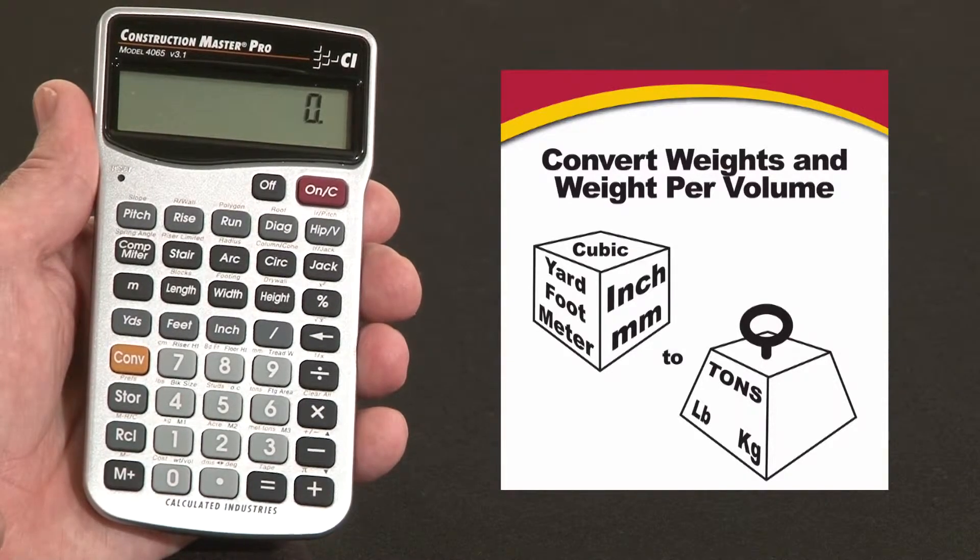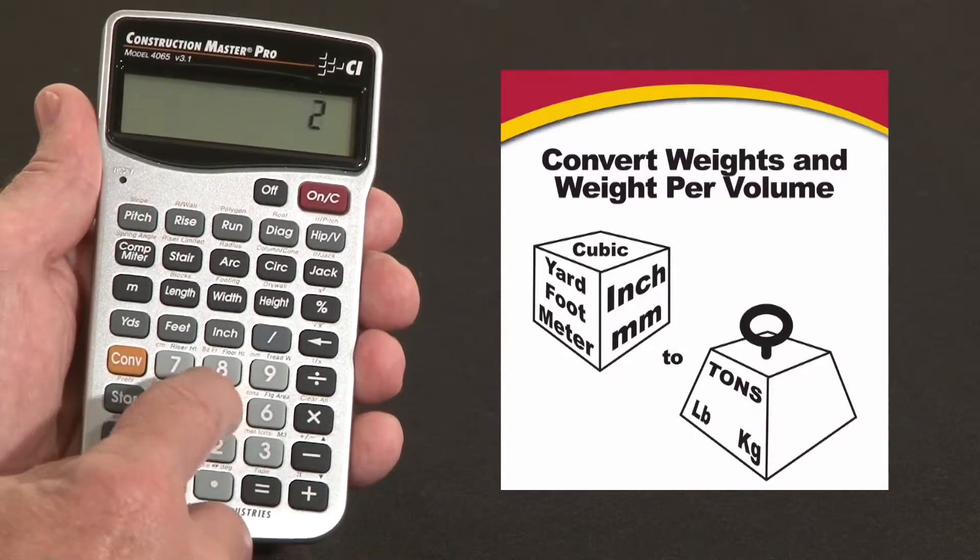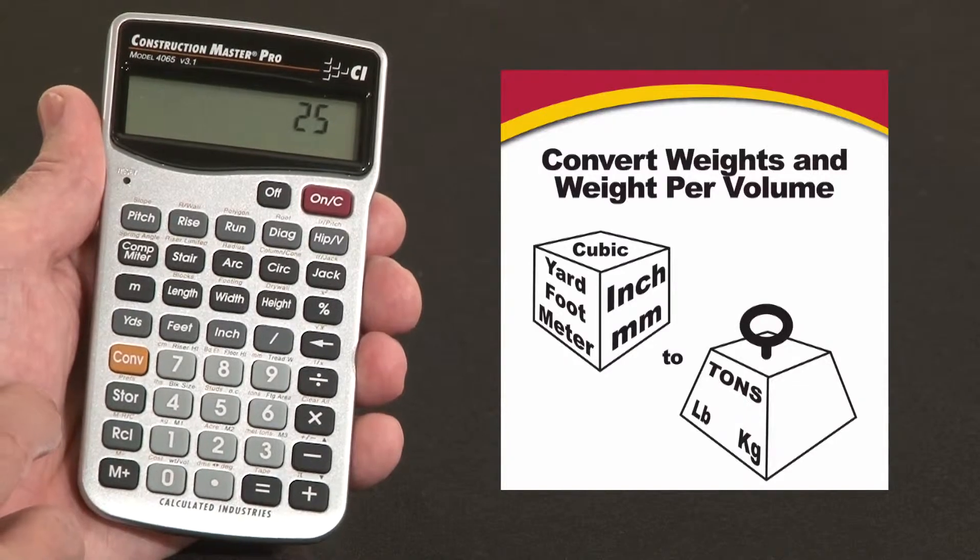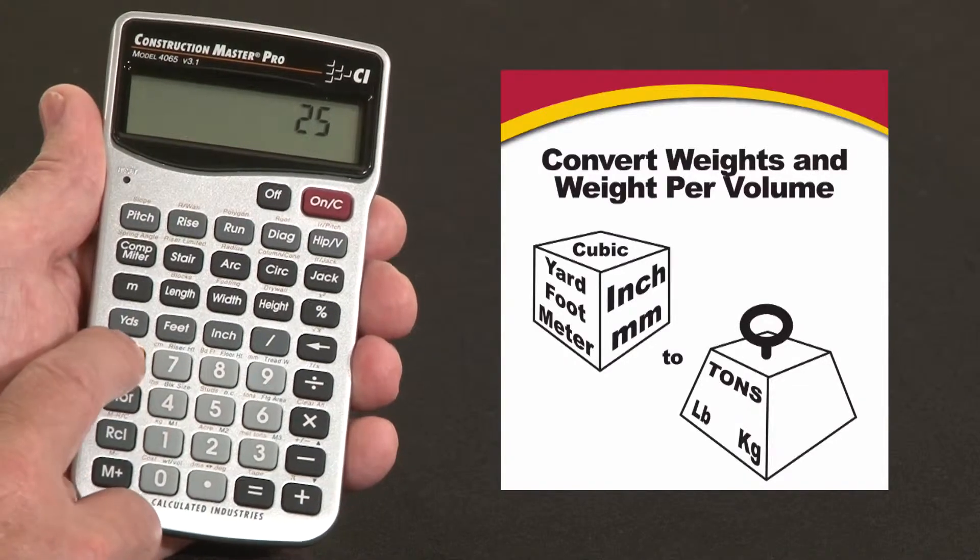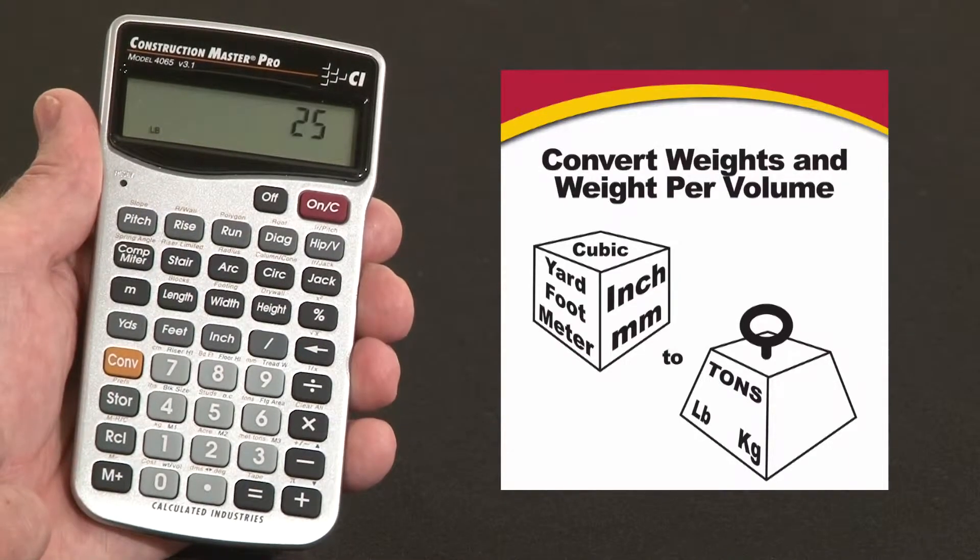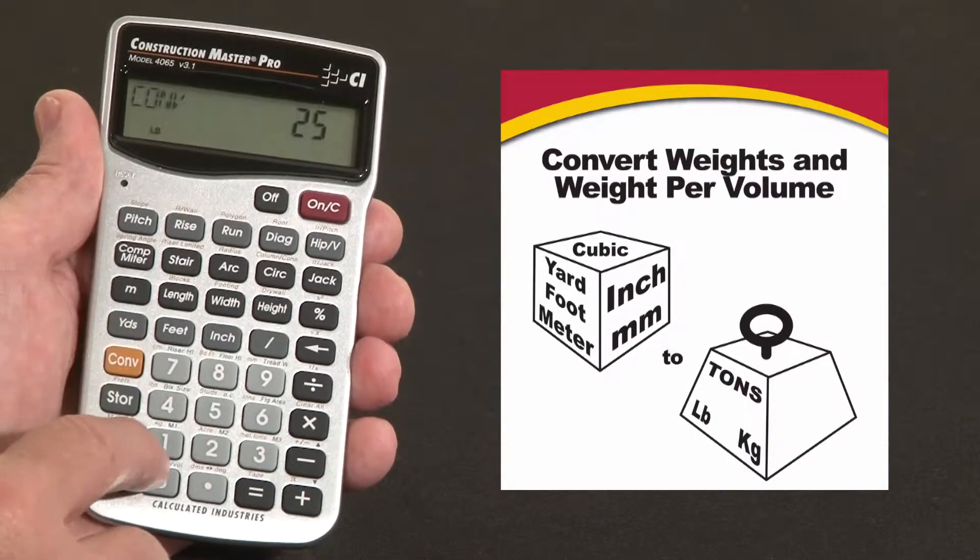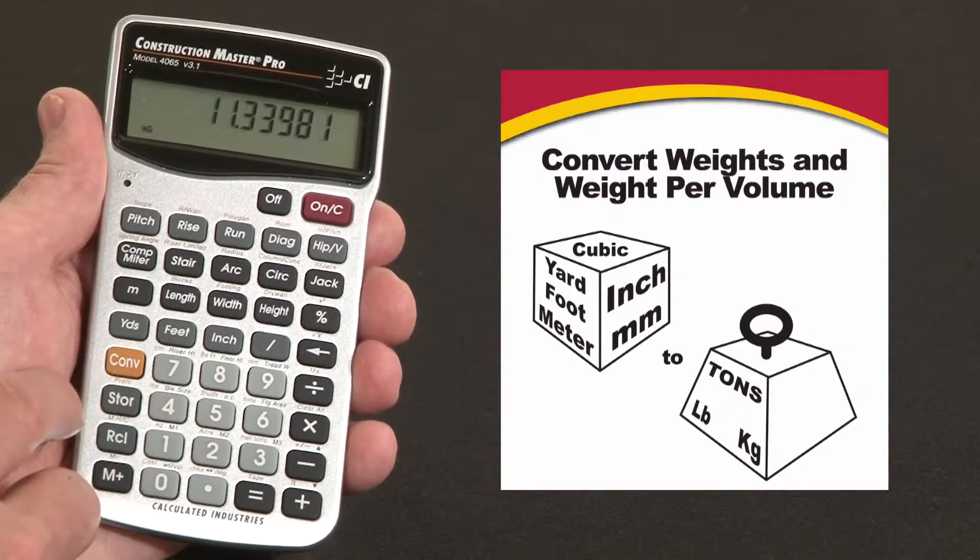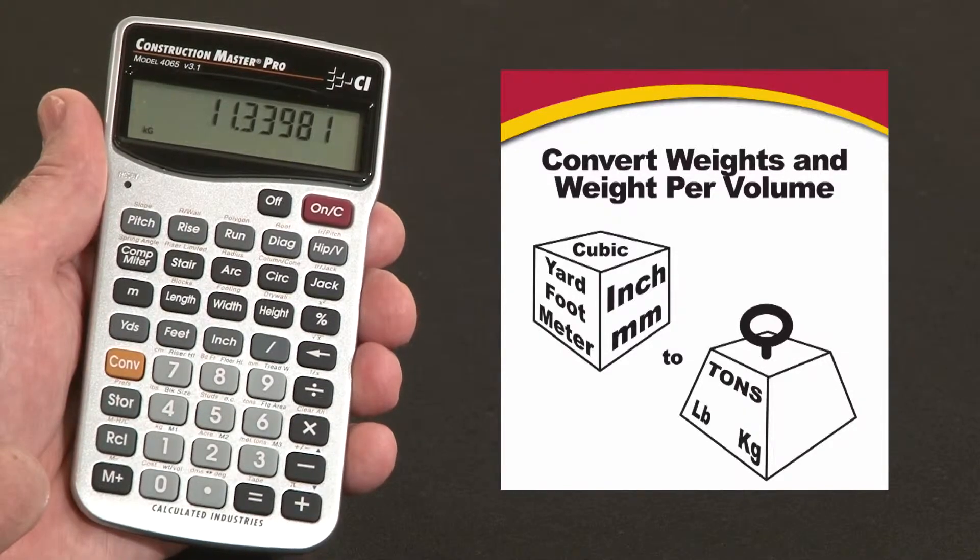Let me show you how to enter weight to begin with. Say you've got twenty-five pounds. Twenty-five, and over the four key, the second function is pounds. So I hit convert the four, enters it as twenty-five pounds. Say I want to convert that to kilograms. Convert over the one key, it says kg, converts that to eleven point something kilograms.